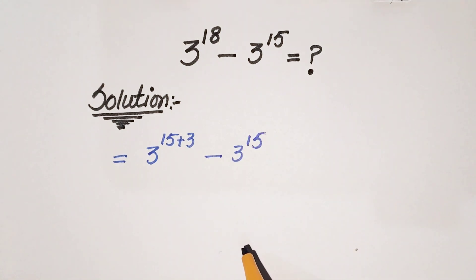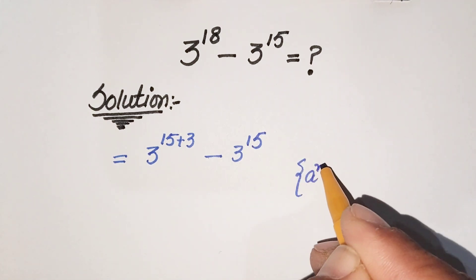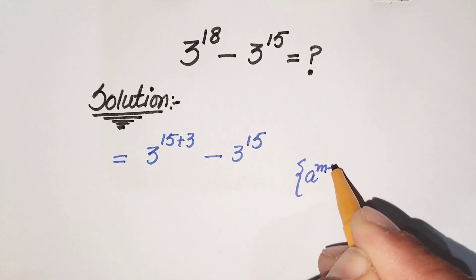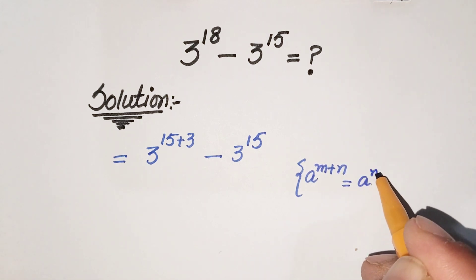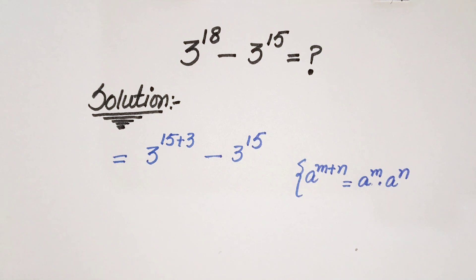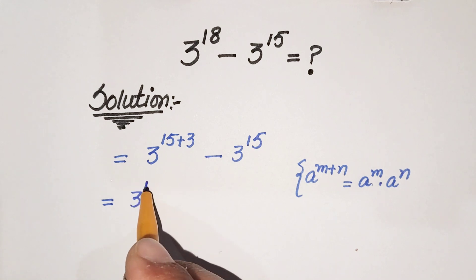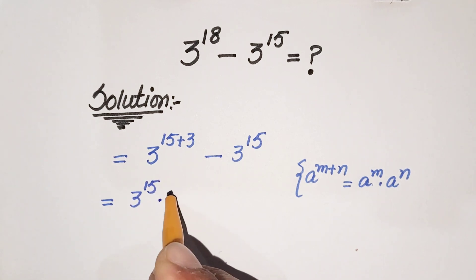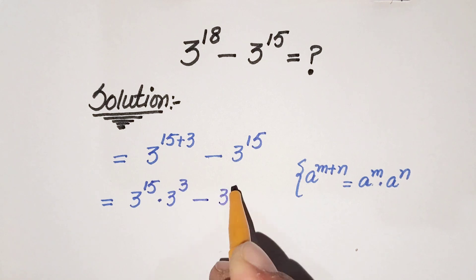Now using the exponential law — as we know that a raised to the power m plus n equals a raised to the power m times a raised to the power n — this step becomes 3 raised to the power 15 times 3 raised to the power 3, minus 3 raised to the power 15.